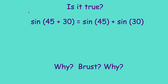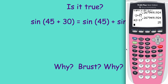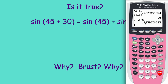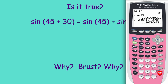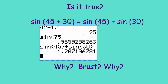Let's talk about this. Is the sine of 45 plus 30 the same thing as the sine of 45 plus the sine of 30? Let's go to our calculator and make sure we're in degrees. The sine of 75 is 0.9659. Now the sine of 45 plus the sine of 30 gives a different result — they are definitely not the same thing. A little close, but not the same thing.